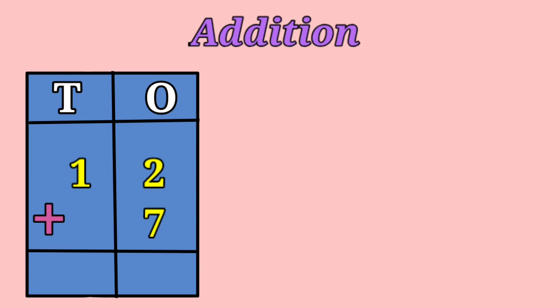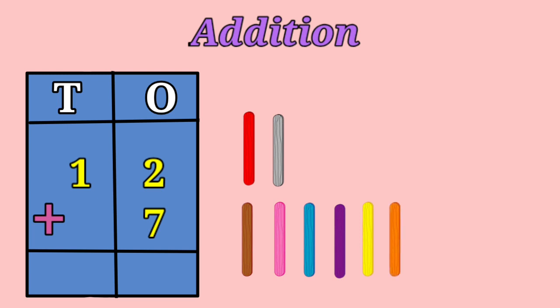By drawing 2 sticks. 1, 2 and 7 sticks. 1, 2, 3, 4, 5, 6, 7. All together we have 1, 2, 3, 4, 5, 6, 7, 8, 9. So 2 plus 7 is 9.